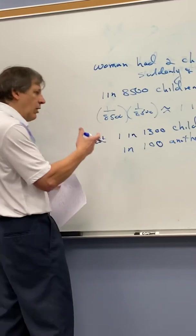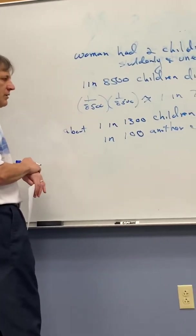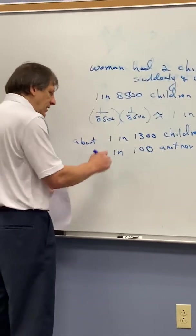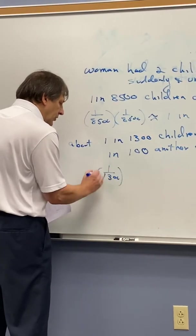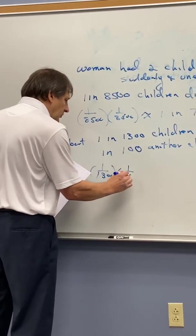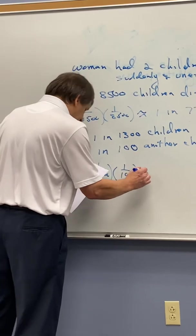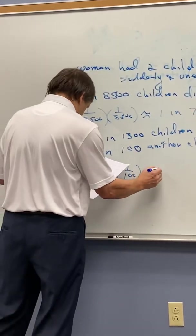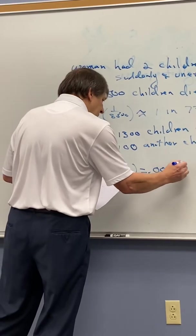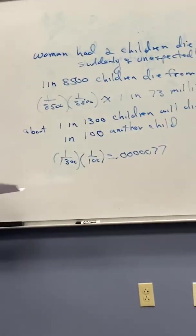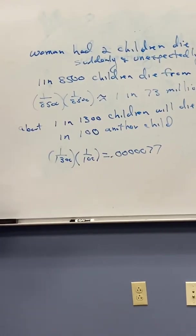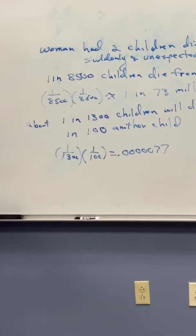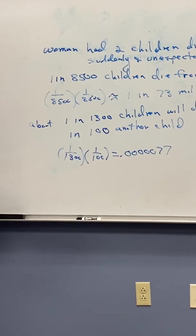So what would the probability of both children having SIDS be under this scenario? It would be 1 over 1,300 times 1 over 100, and that is approximately equal to 0.000077. Still a very rare situation, right? And probably strong enough, at least in many cases, to convict somebody.